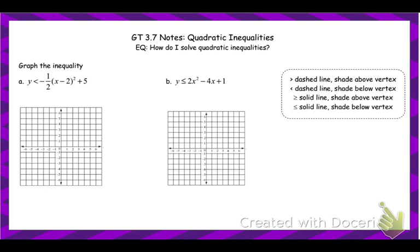In order to graph quadratic inequalities, it's very similar to graphing inequalities of lines. Less than or equal to, or greater than or equal to are going to be solid lines. If it's not 'or equal to,' it's going to be a dashed or dotted line.